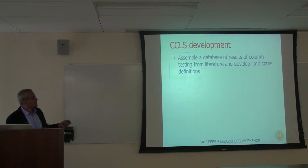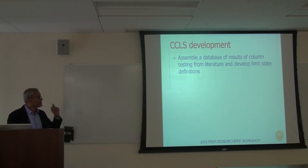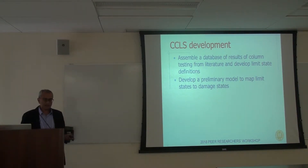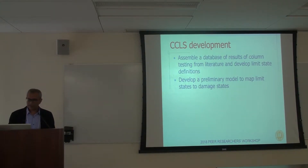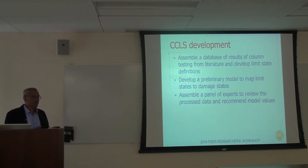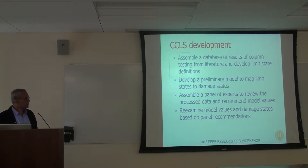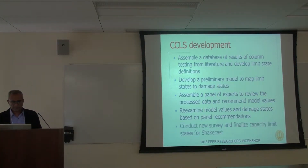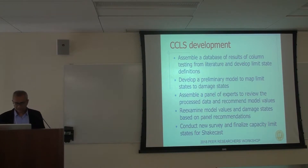CCLS stands for Component Capacity Limit States. What Georgia Tech did was assemble a large database of column tests from the literature and come up with these limit state definitions — and then develop a model to map deformation limit states to damage states. This is where the workshop comes in: assembling a panel of experts to review this data and recommend model values. After the workshop, the ongoing task is to re-examine the original model values and damage states and see how they can be updated based on panel recommendations. The next step is to conduct a new survey and finalize these capacity limit states for ShakeCast.